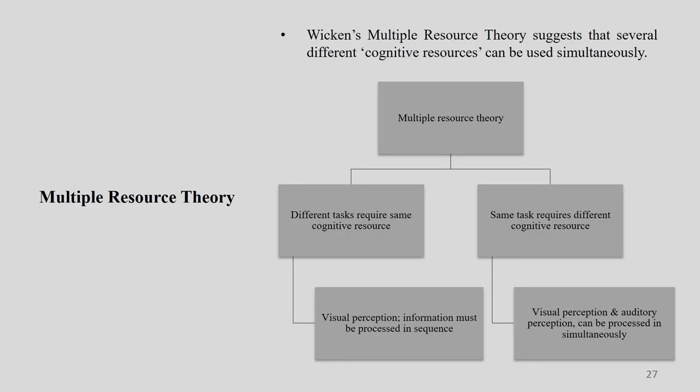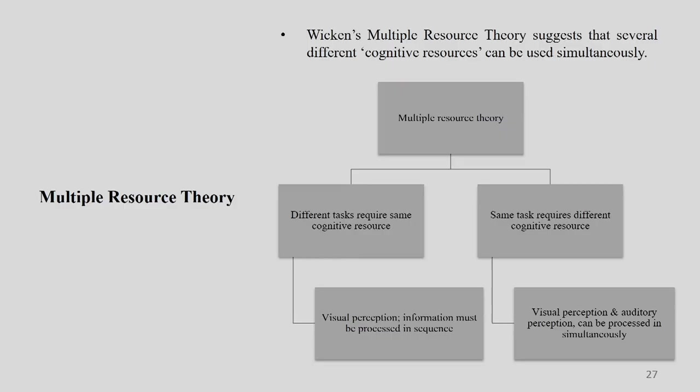In the first case, where two tasks require the same single cognitive resource, visual perception information must be processed in sequence — here comes the interference. In the second case, where one task requires both visual and auditory perception, both can be processed simultaneously. For example, in writing, if you need visual as well as auditory processing, you process them simultaneously.